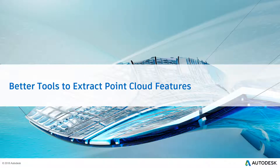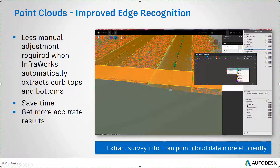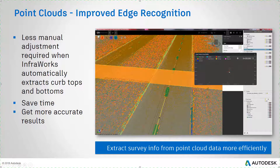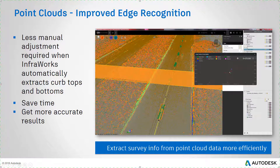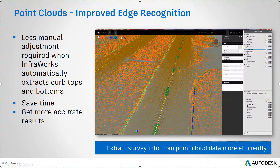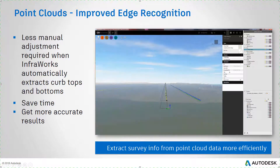Let's start by looking at improvements to point cloud feature extraction tools in this latest release. InfraWorks will now analyze a point cloud more accurately, as it automatically places vertices where it detects the top and bottom of a curb in cross-section view. This improved precision means that you'll spend less time manually adjusting curb break lines and that you'll get more accurate results from the software. It means that you can extract survey info from your point cloud data more efficiently than ever before.